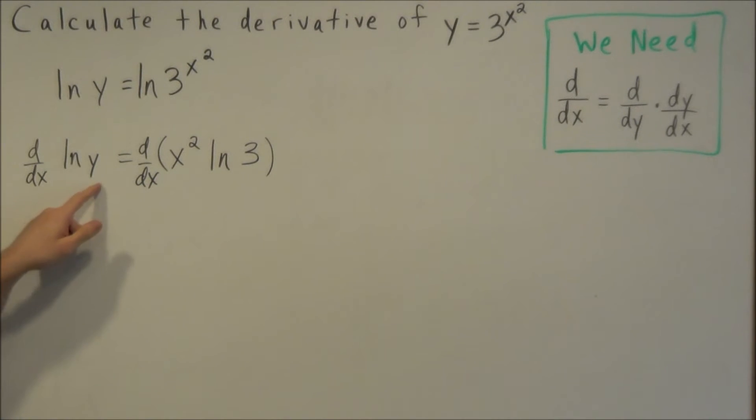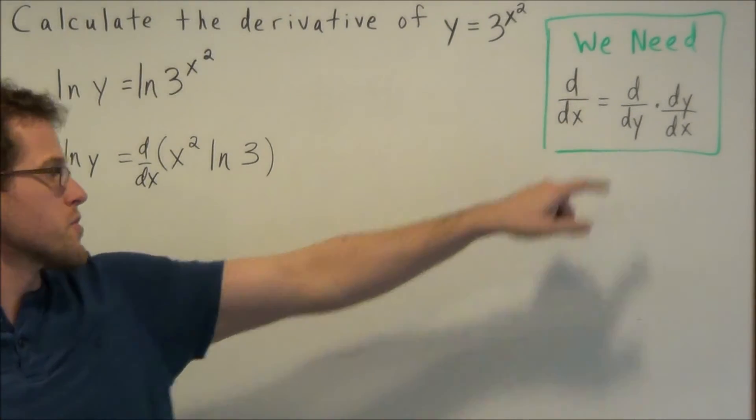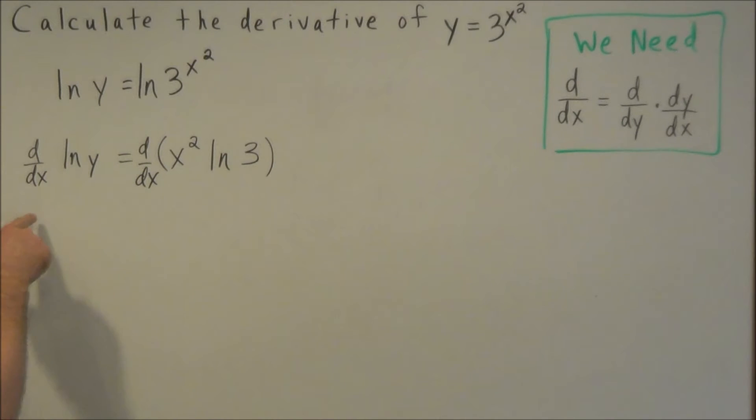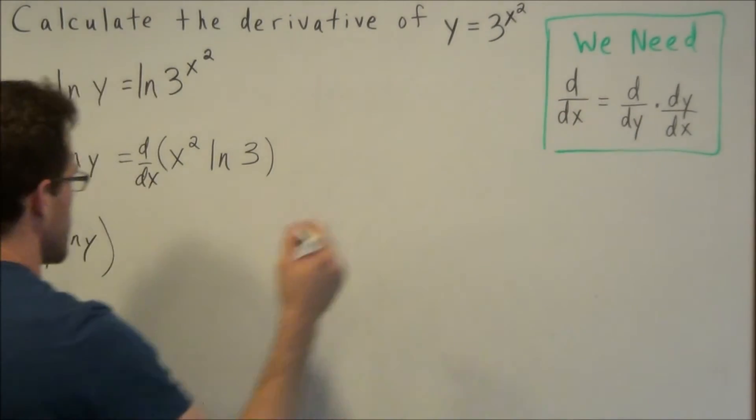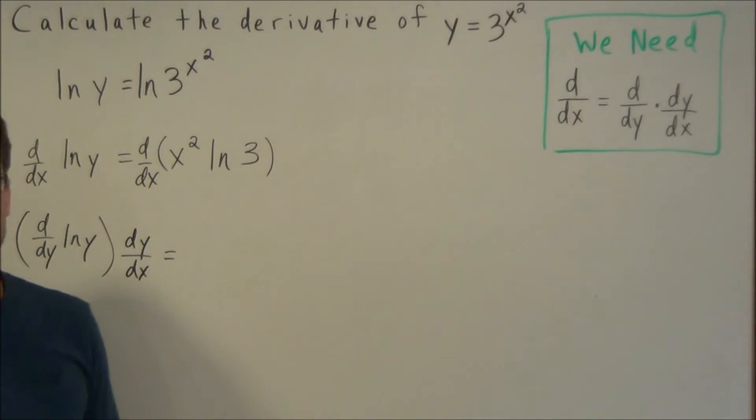But on the left hand side, our variables do not match. So this is where we're going to need the chain rule to go forward here. So we're going to rewrite the left side. We could take the derivative with respect to the variable y. However, if we replace d over dx with d over dy, we need to multiply by dy dx. Okay, so on the left hand side, we're basically just applying the chain rule here and using implicit differentiation.